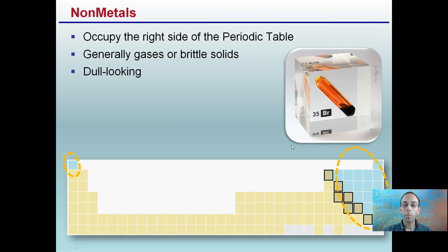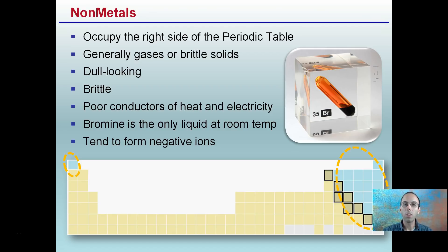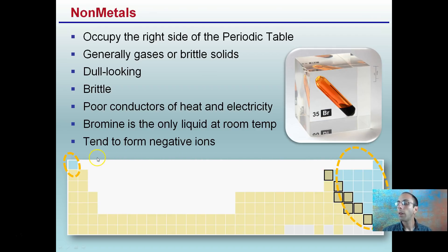In contrast, if you're a non-metal — again, located in this region on the periodic table — they occupy the right side. They're generally gases or brittle solids, have a dull-looking appearance, and are poor conductors of heat and electricity. Bromine is the only liquid at room temperature, and they tend to form negative ions. Also, don't forget about hydrogen, located way over on the far left side — it is also classified as a non-metal.